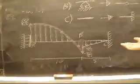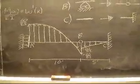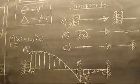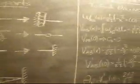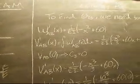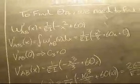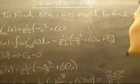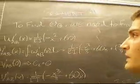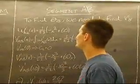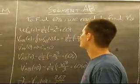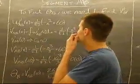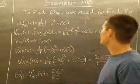Now that we have seen our conjugate beam and the loading, we will take the equations found in the real beam over EI to solve for the shear and moments of the conjugate beam. To find the slope at B we need to find the shear at B. We start with our loading equation from A to B: 1 over EI times negative x squared plus 60. We integrate that to get our shear equation of the conjugate beam.